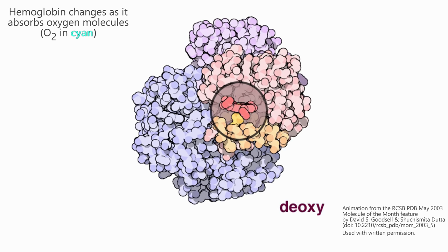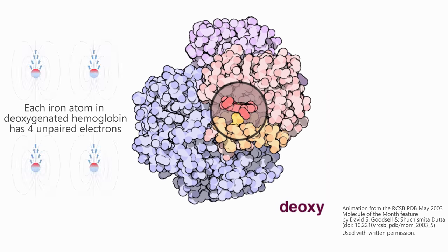In hemoglobin, the number of unpaired electrons in the iron atoms actually change, depending on whether it is oxygenated or not. The iron atoms in deoxygenated hemoglobin each have four unpaired electrons,